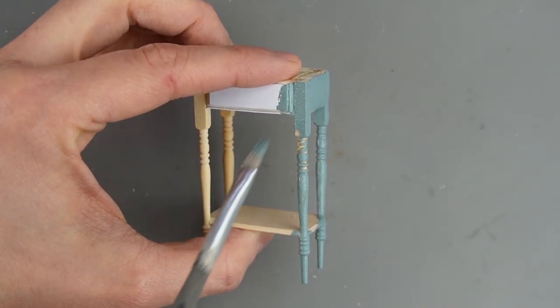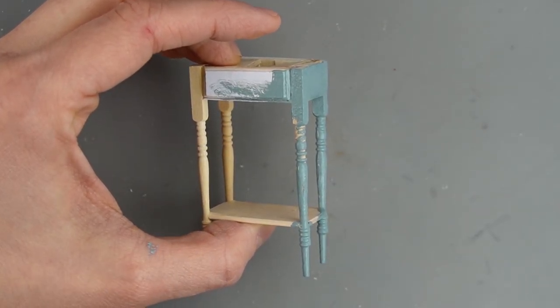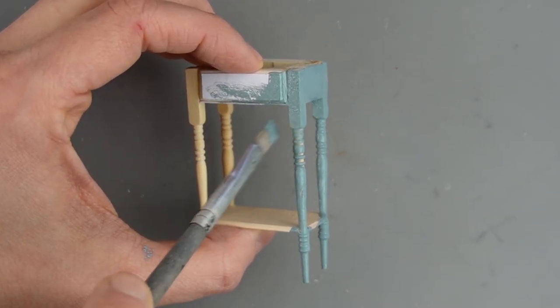When I'm painting turned details like you see on these balusters, I turn my brush sideways and slap it back and forth.